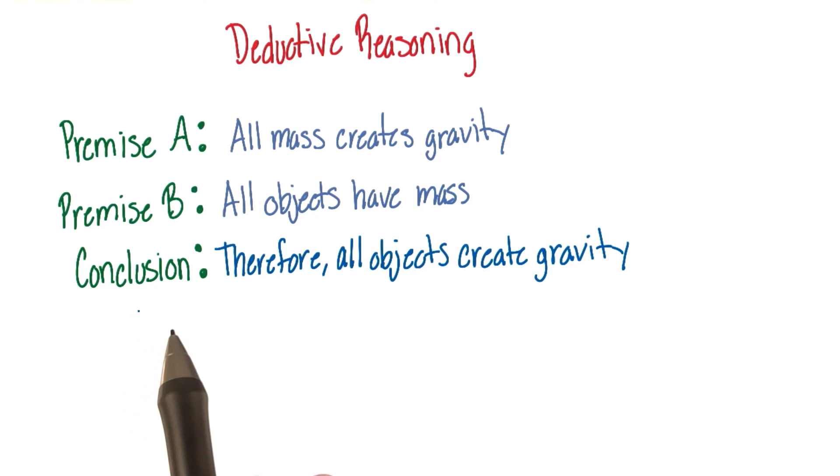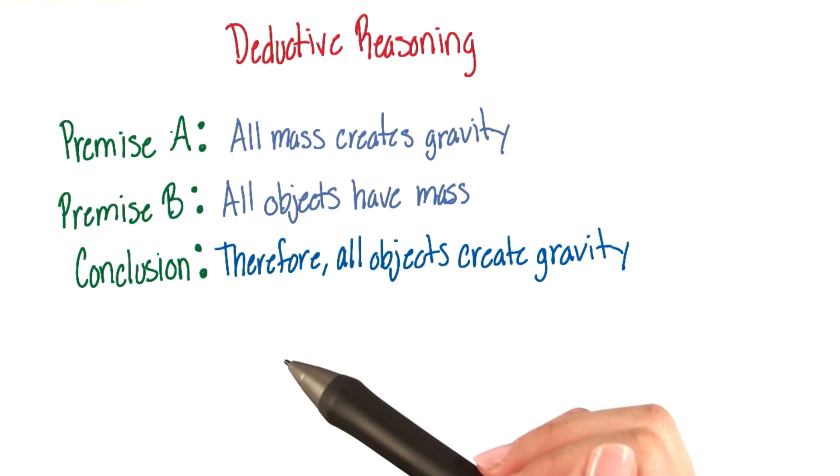We know, however, that this type of reasoning can lead to correct conclusions only when the general premises to which they are based are true. Let's look at another example.